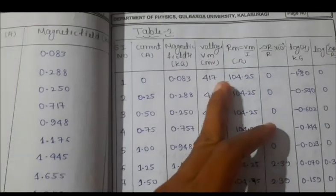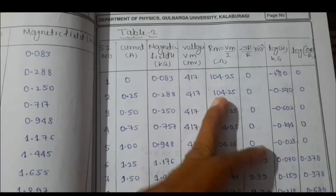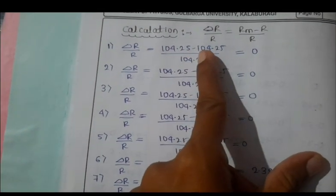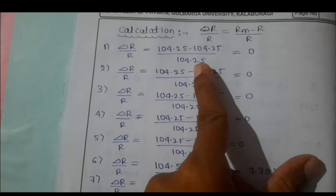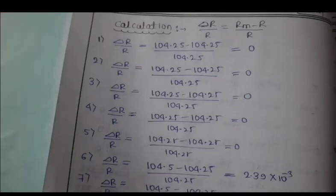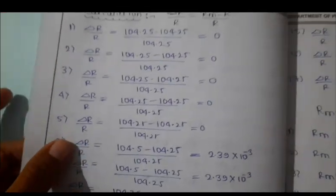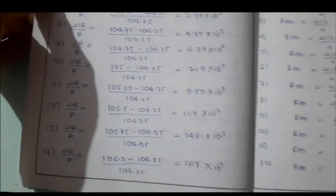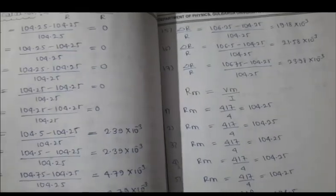How you can calculate: if you take the first reading, change in resistance delta R is the difference between two consecutive readings divided by the resistance itself. First few readings are zero, so then go for the remaining readings. Once you have done all the calculations,